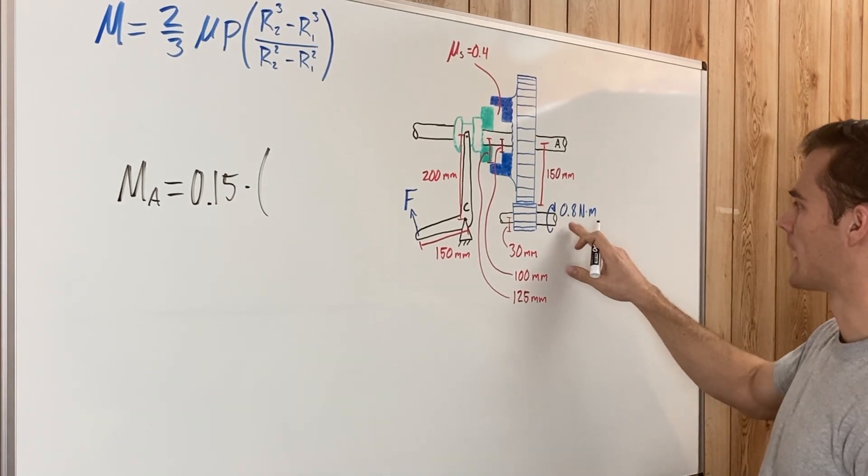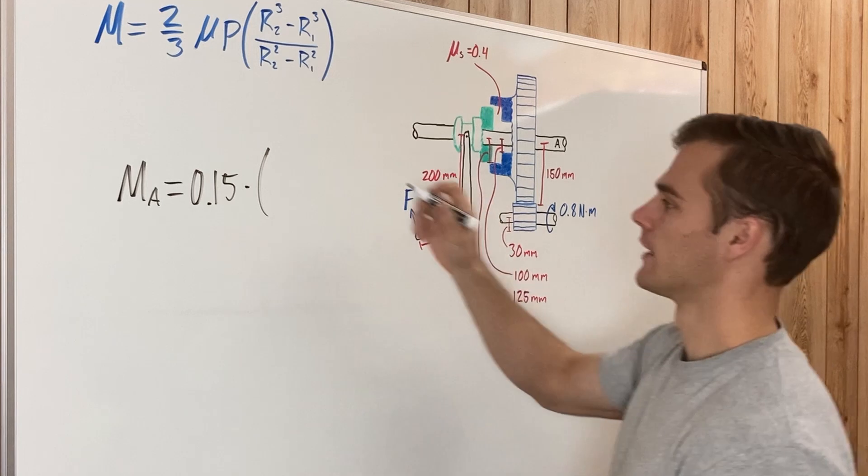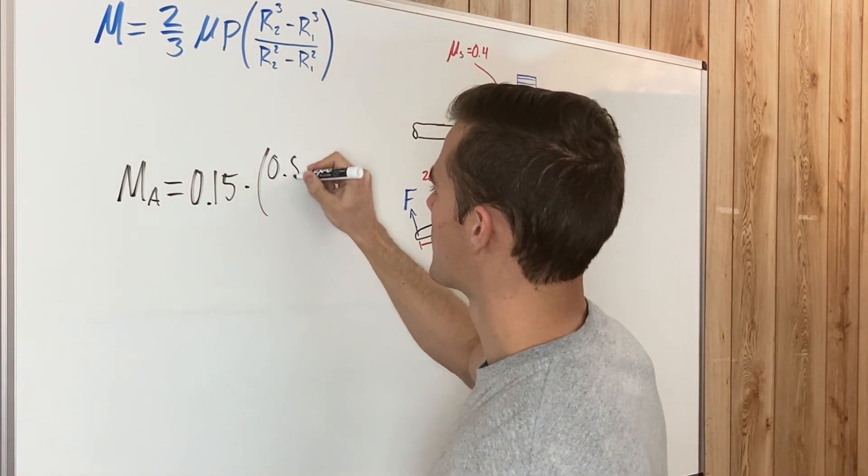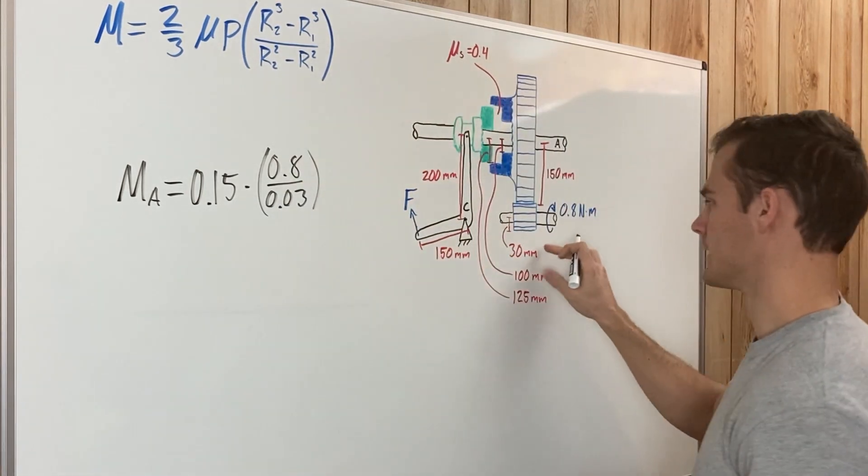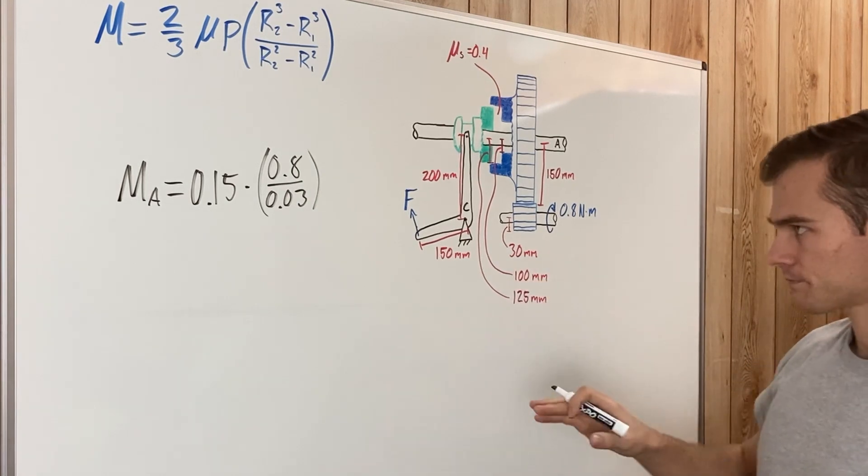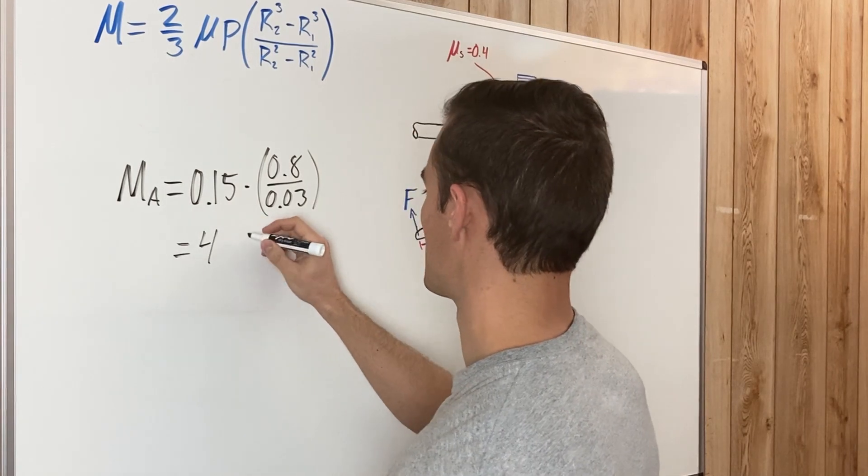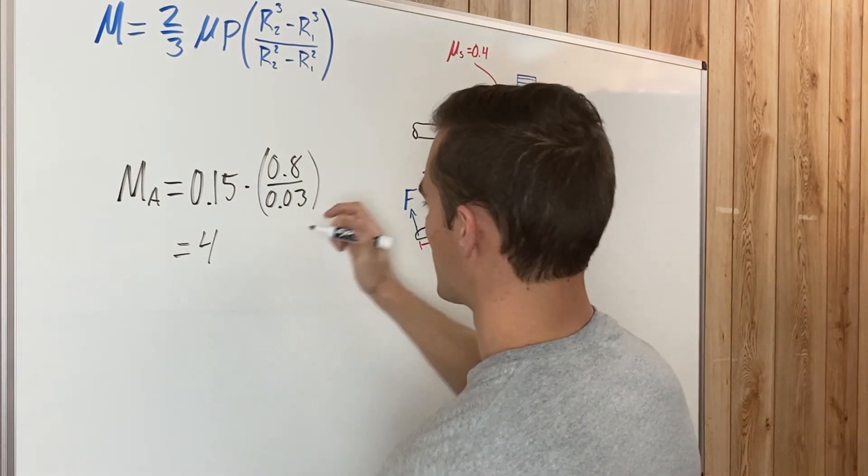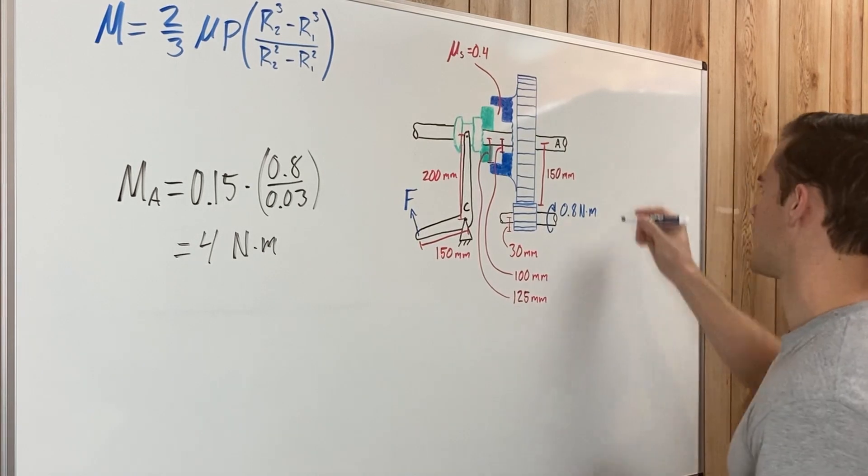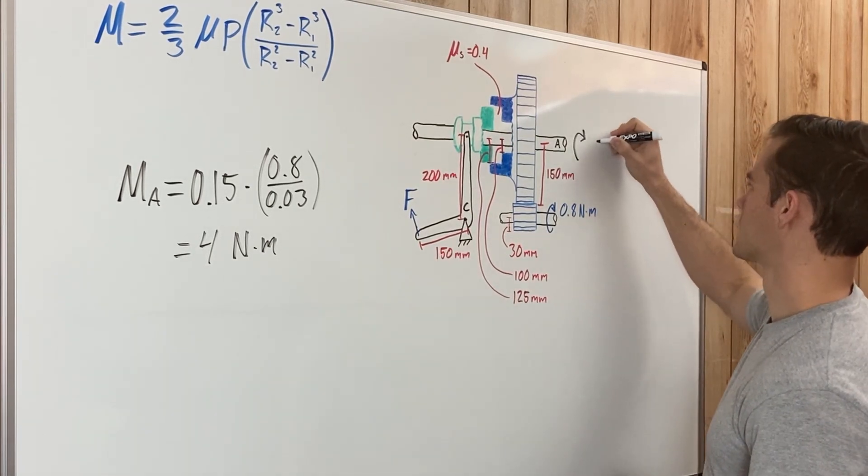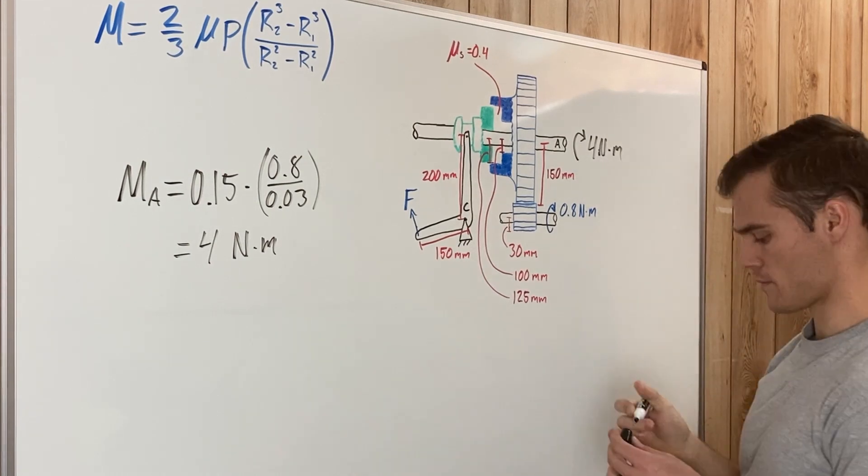When we divide this moment here by a distance, we get out that force. We have 0.8 divided by 0.03, which is the radius of that gear. That gives us our moment. Plug that into your calculator and this moment applied around this gear A is 4 newton meters. We'll label that right here. This has a 4 newton meter torque on it.